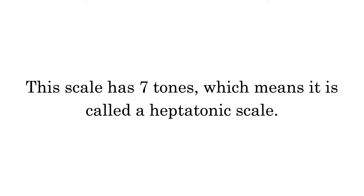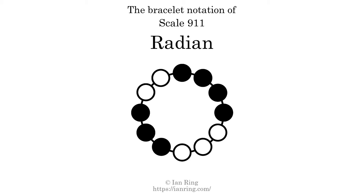This scale has 7 tones, which means it is called a heptatonic scale. This is a bracelet notation diagram of Scale 911. The shaded circles represent tones that appear in the scale, and they are read clockwise, starting at the top.